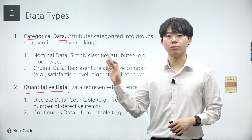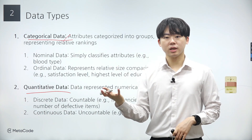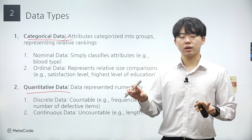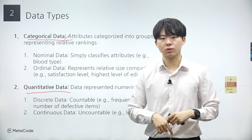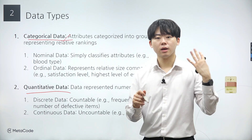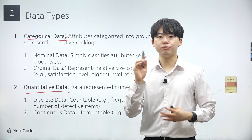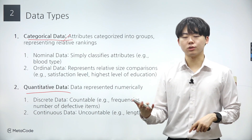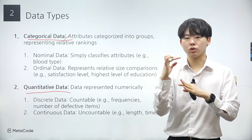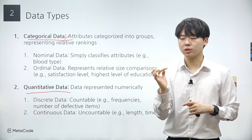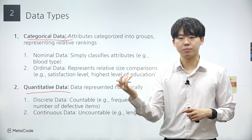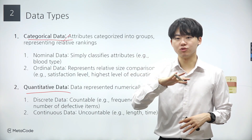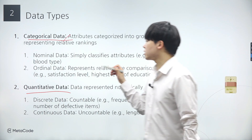While each value of both data types can be divided into categories, grades exhibit a hierarchical relationship, with an A being considered higher than a B and a B higher than a C. Conversely, the relationships between blood types are not hierarchical. For instance, it's difficult to determine if blood type A is higher than blood type B or O in any meaningful sense.